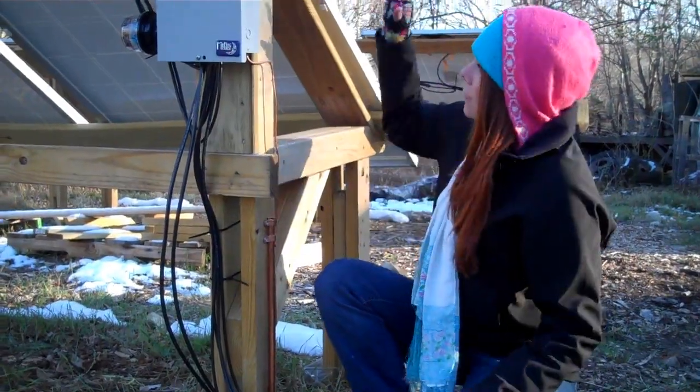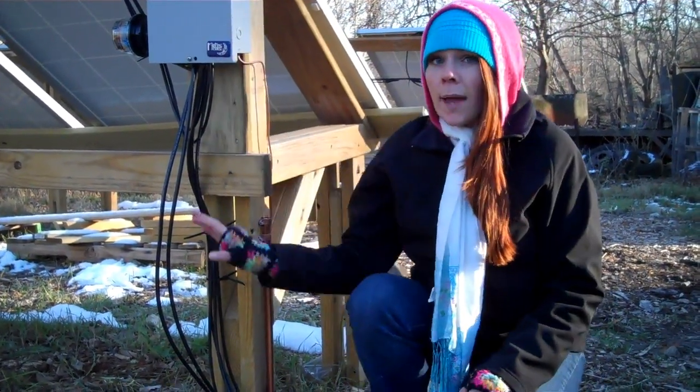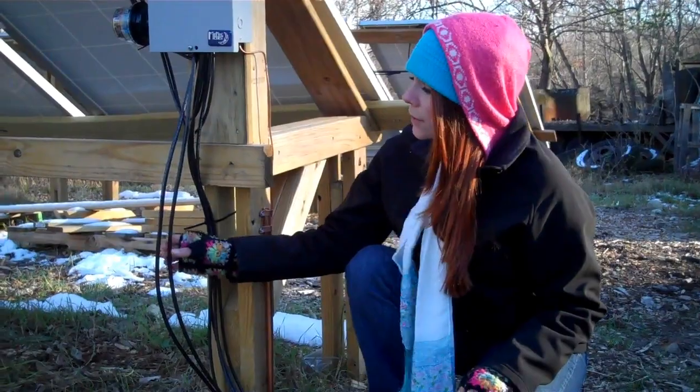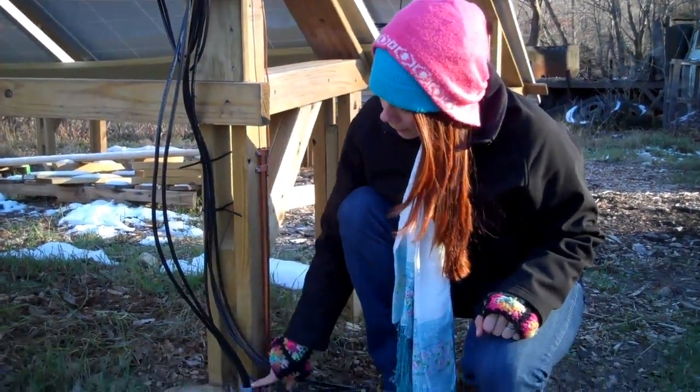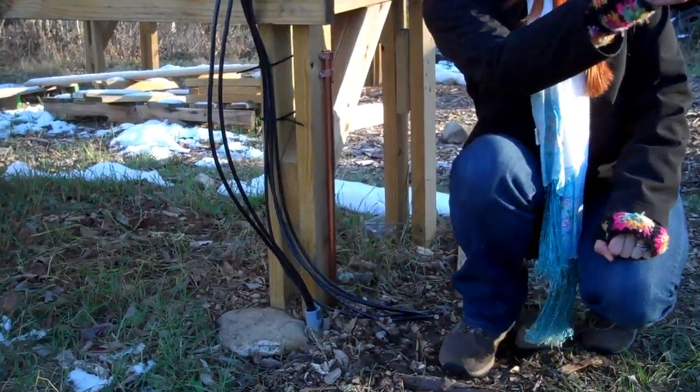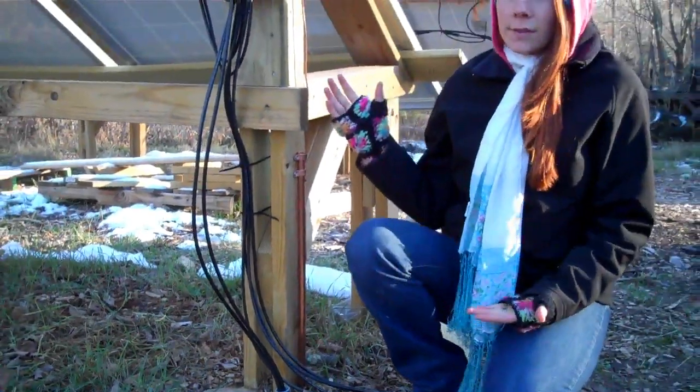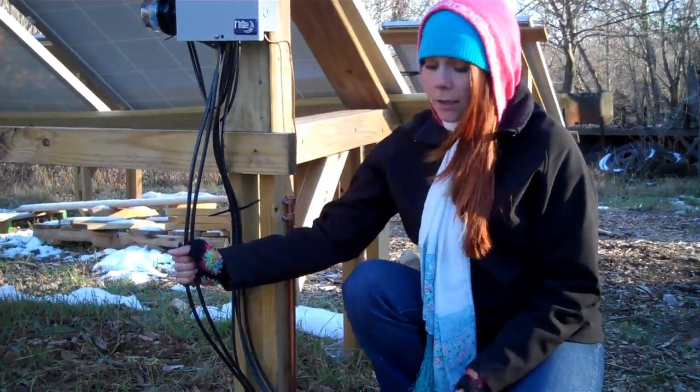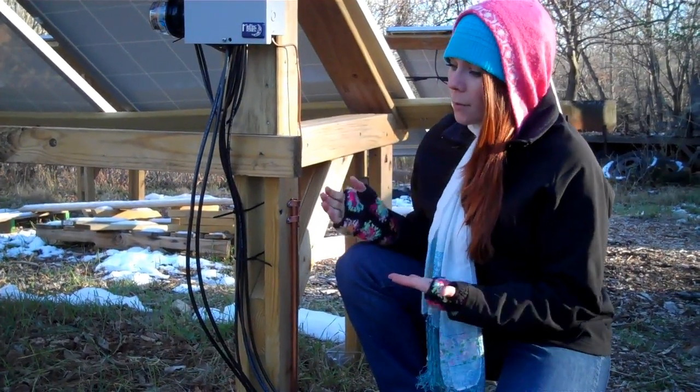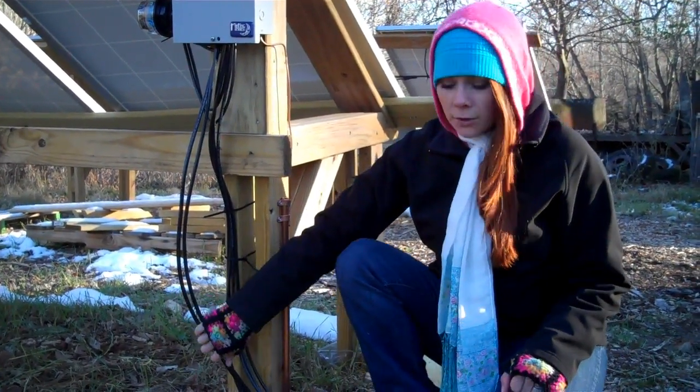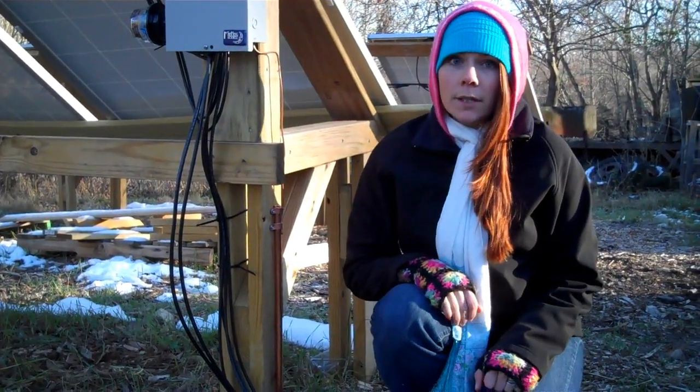So now that we've connected all of the panels here in the combiner box, the main things leaving the combiner box and heading back towards the house are a master positive and a master negative, which we fed through conduit and it's tracing back to our utility box at the house. Now depending on the power of your system and the distance this wire needs to travel will tell you what gauge you need. So ours ended up being a 4 gauge that we needed to run from the panel's combiner box up to the utility at our house.